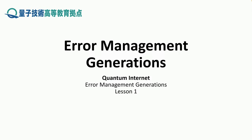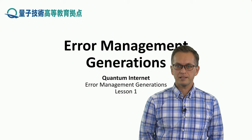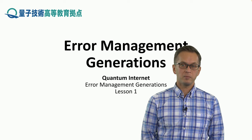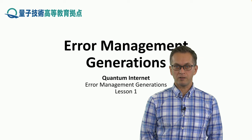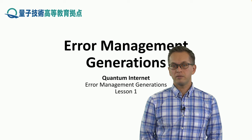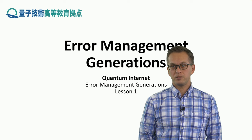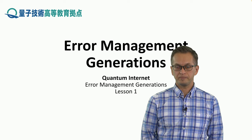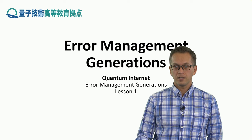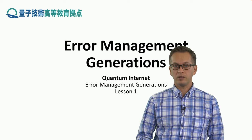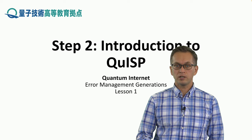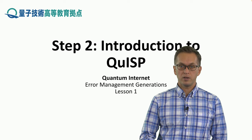Lesson 1 is on Error Management Generations. In this lesson, we're going to talk about the different types of errors that can occur in quantum networks and the different ways of managing these errors. So, let's begin with the next step, called Introduction to QISP.